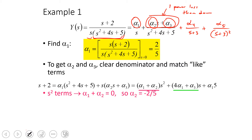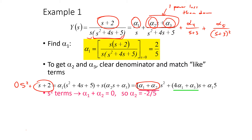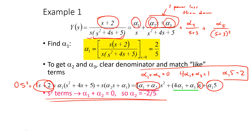We multiply over and collect terms. With s+2 on the left-hand side, matching s² coefficients gives α₁ + α₂ = 0. Matching the s¹ coefficient gives 4α₁ + α₃ = 1. Matching the constant term gives 5α₁ = 2. We now have three equations and can solve for the three unknown alphas.